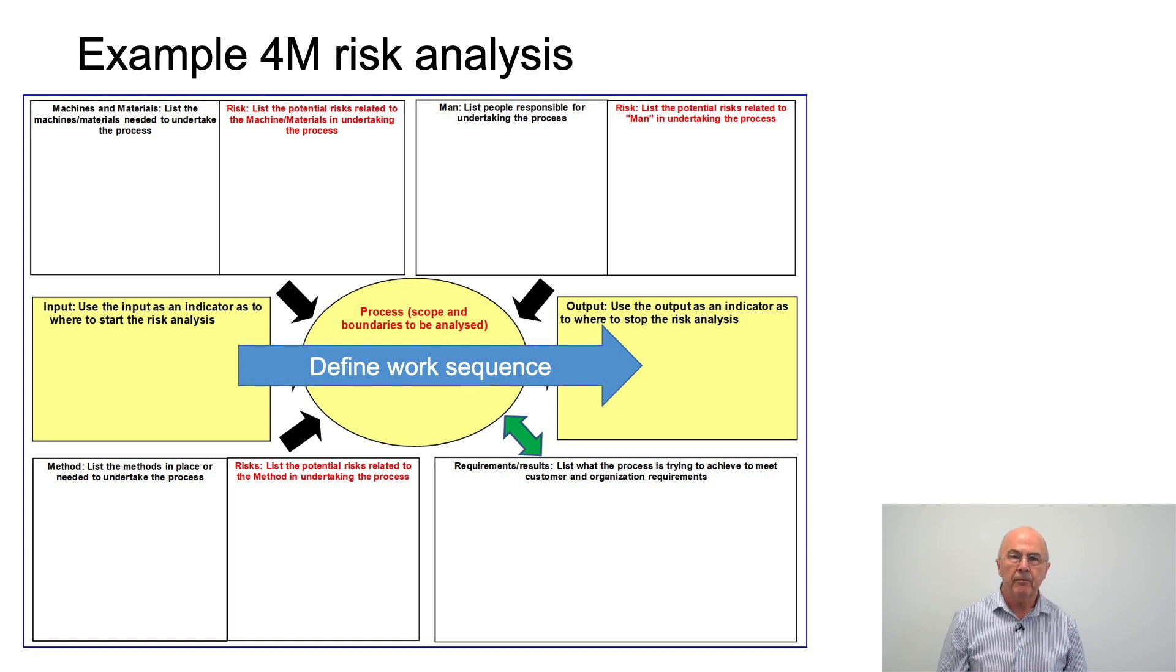Then we can think about the man-related risks for this step of the process, so who's going to be involved and what are the risks related to those people. Then we can move across to the top left, which is thinking about the machines and the materials that are needed for this step of the process and the associated risks.